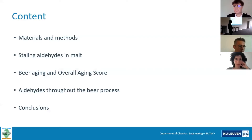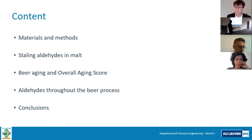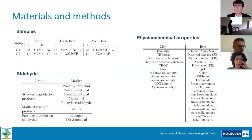So first, how the staling aldehydes are present in malt, then how is the beer aging process and how can we obtain an estimation of the overall aging score that I will explain in a minute. And finally, a more thorough study of the aldehydes concentration through all the beer process. And to end with some of the conclusions of this study.